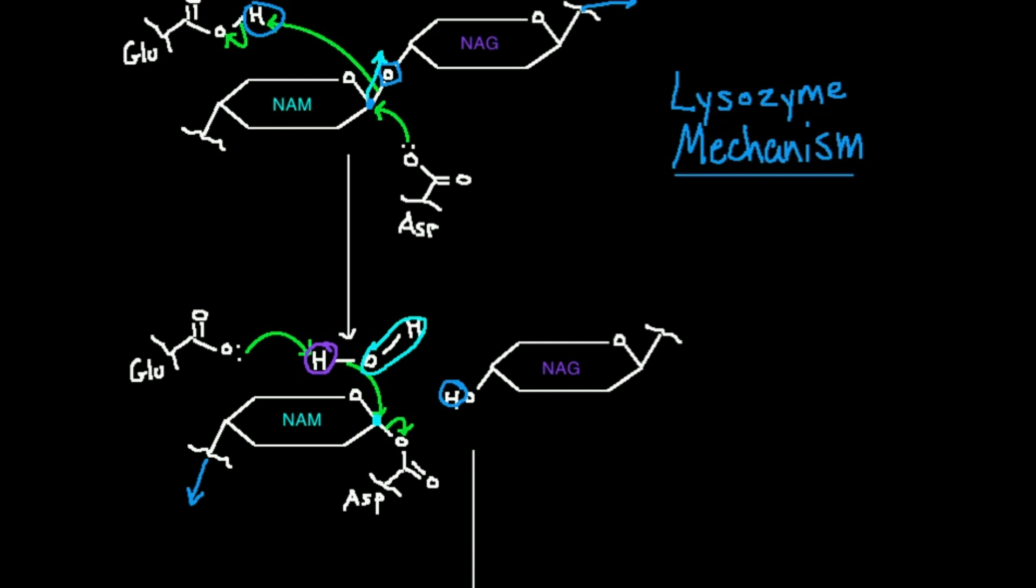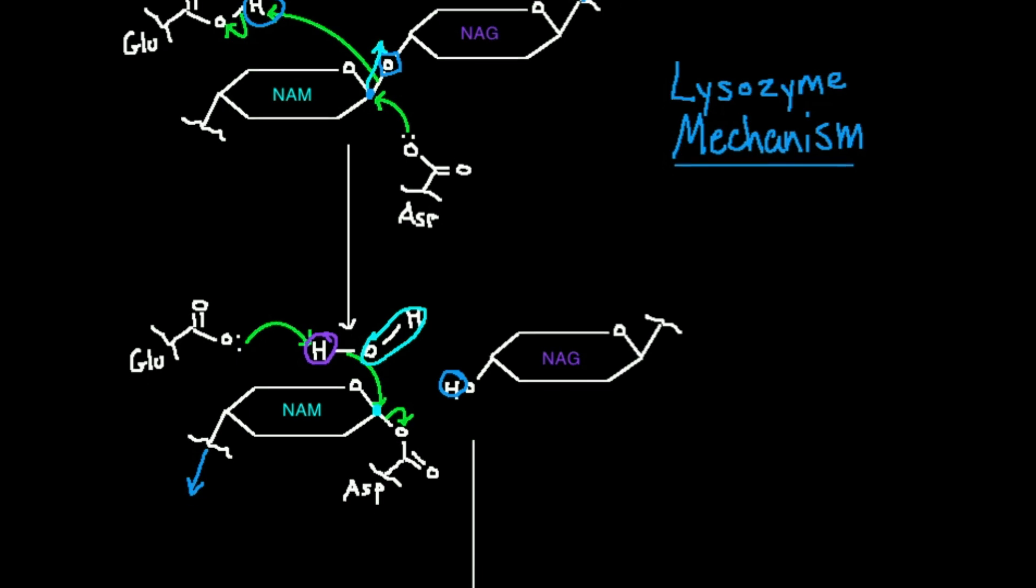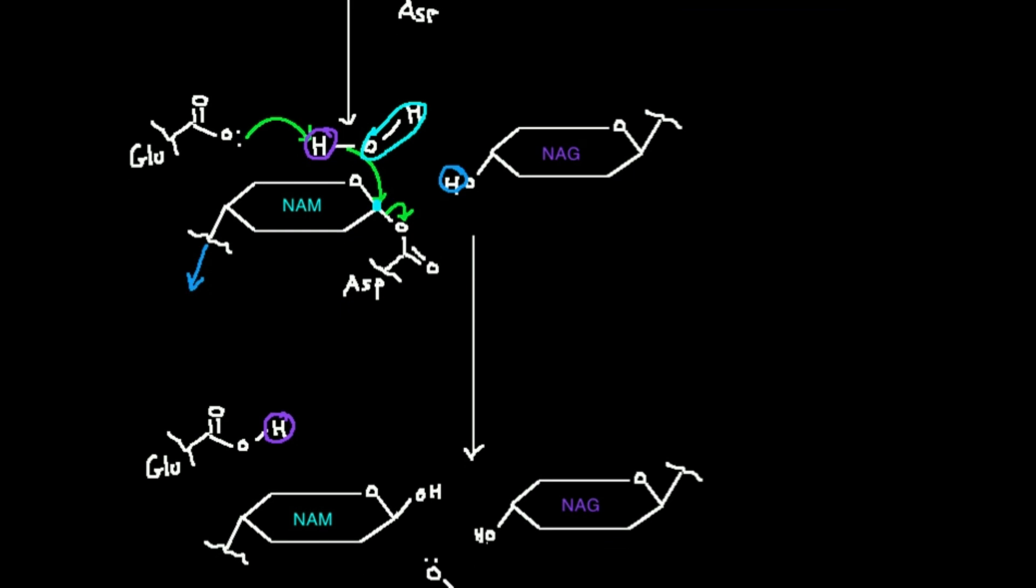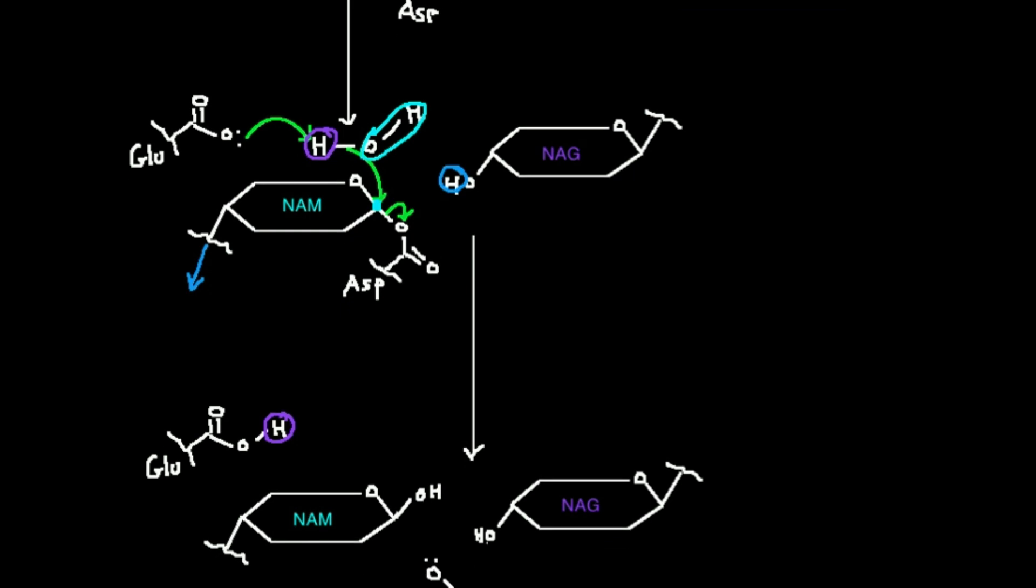And that also means the glutamic acid has to be up here. Because for this hydroxide to attack from the top in the second step, the glutamate would have to be on the top to deprotonate the water because the water has to be on the top. So just a little bit of understanding why the certain moieties, these functional groups, are positioned in the place that they are.